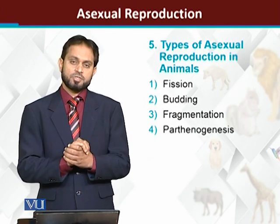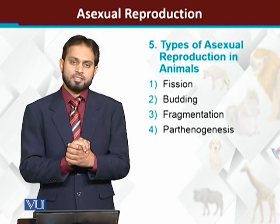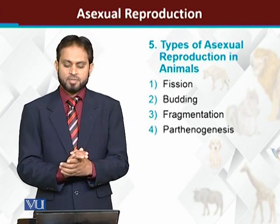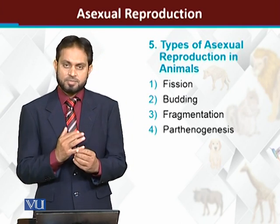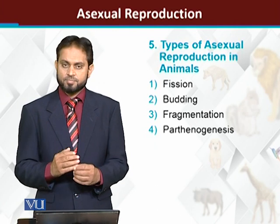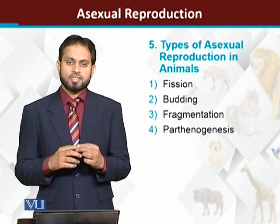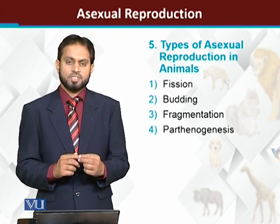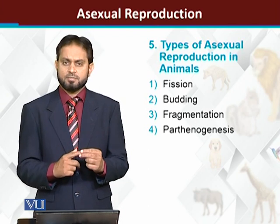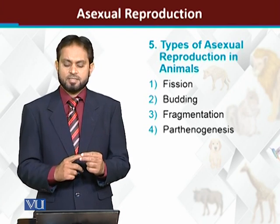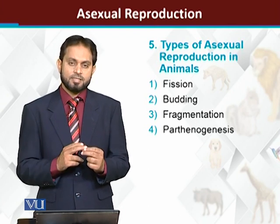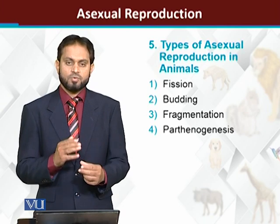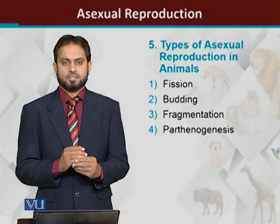The types of asexual reproduction that exist are: number one, fission — which means to divide; number two, budding; number three, fragmentation; and number four, parthenogenesis.